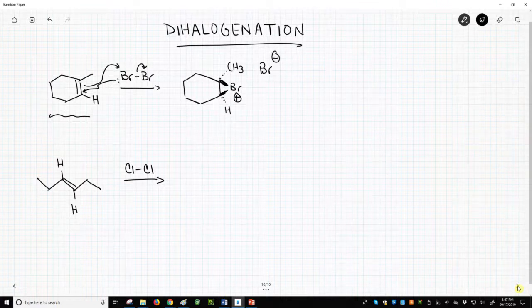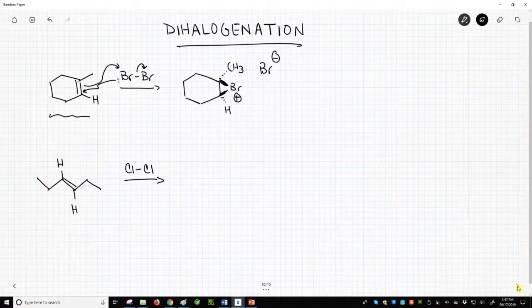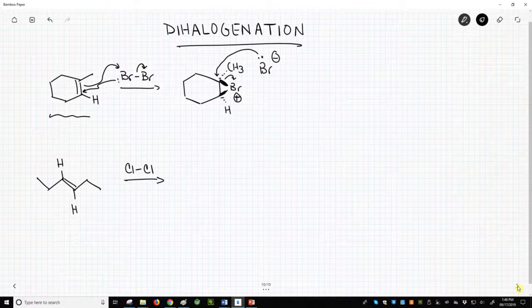The three-membered ring is going to open up. It gets opened by the bromide counter ion. The bromide attacks at the more substituted side of the bromonium ion from the bottom face of the structure. It attacks opposite from the first bromine.